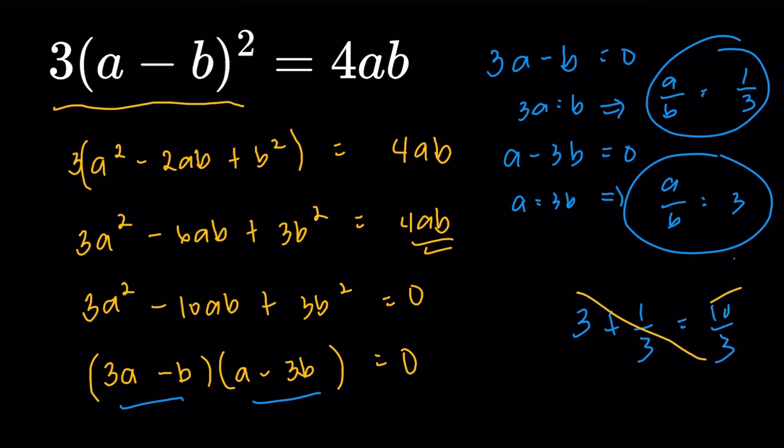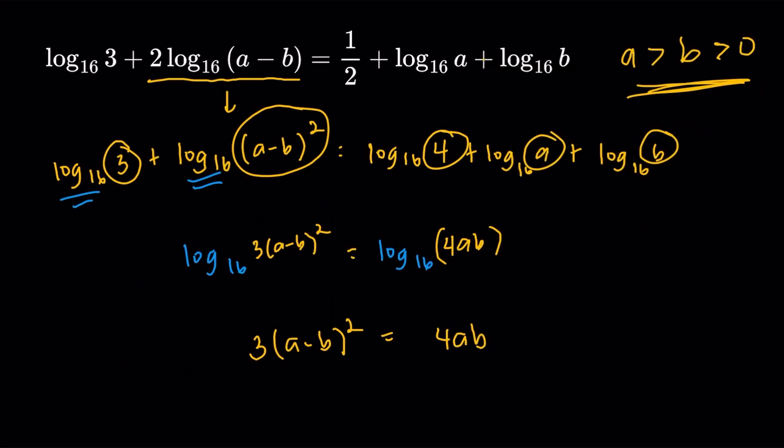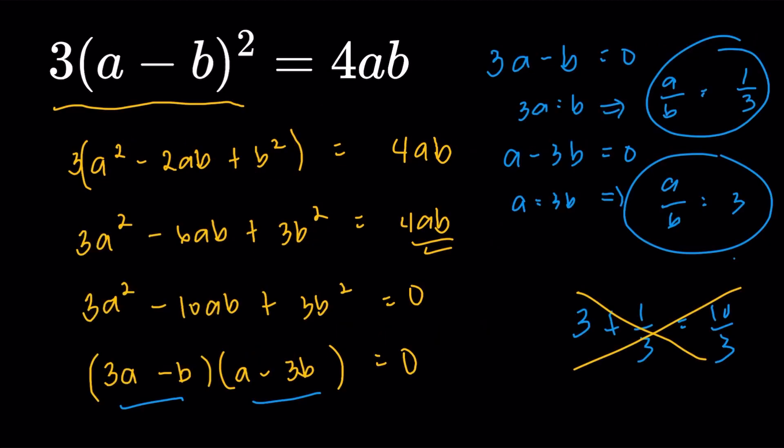Actually, not really because there is actually a value here that will not work. Why would it not work? Let's always go back to the thing we mentioned. We do have a being greater than b being greater than 0. So a and b are both positive and a is bigger than b. So let's just say if we have a over b to be 1 third, that's going to mean that the numerator is smaller than the denominator. But we know that's not true because we do have a to be greater than b. And that's the reason why we are not going to consider the 1 third case.